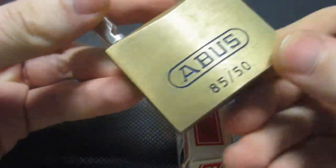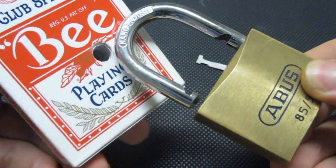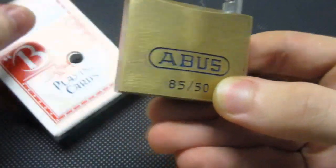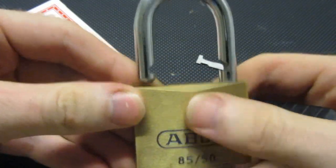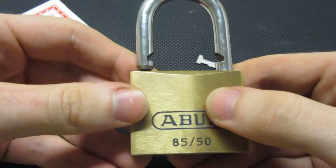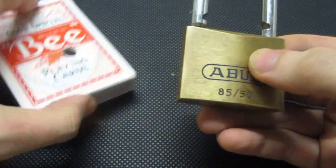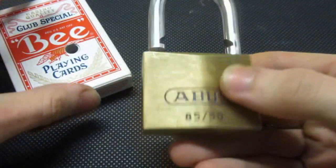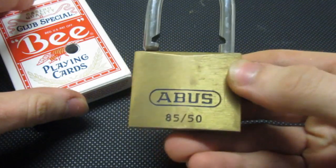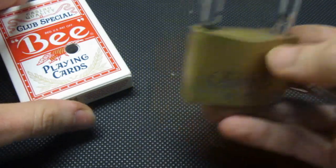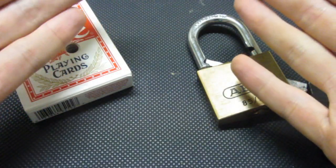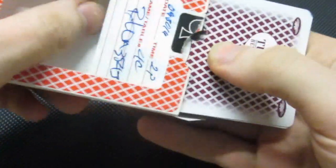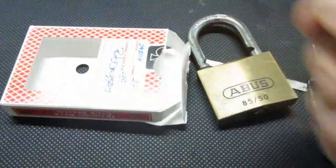So if you want to prevent your friend from using his lucky deck, do not use an Abus 8550 to secure it. You should upgrade to something else. In the meantime, I guess I'm off to play a couple games. See ya!